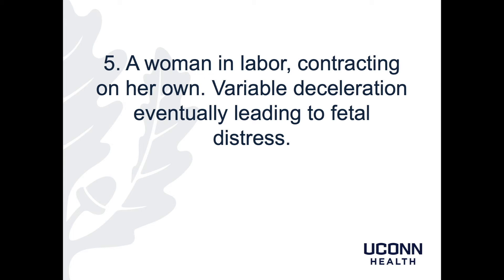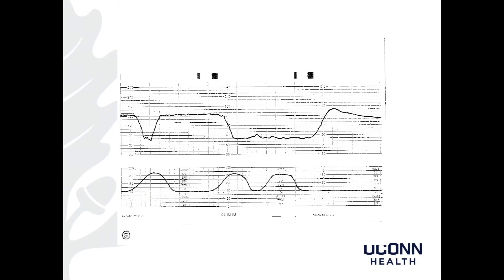Patient 5 is a woman in labor contracting on her own. There is a variable deceleration eventually leading to fetal distress. My read: baseline of 150s with minimal variability. There are no accelerations. There is a positive variable deceleration, followed by a prolonged deceleration. This is a Category 2 tracing. You can see that the prolonged deceleration goes down similar to a variable deceleration but lasts about 2.5 to 3 minutes — that's what makes it prolonged.